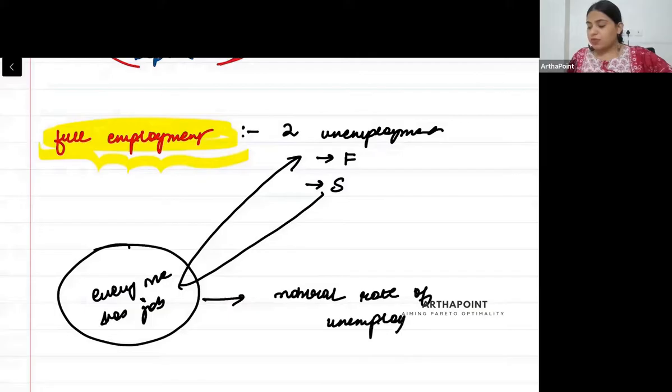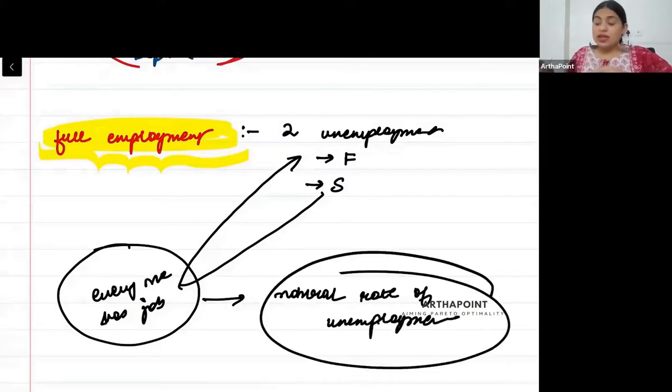Natural rate of unemployment means this is naturally occurring. It's not created because of recession or depression or anything like that. This unemployment exists because these two things are natural.